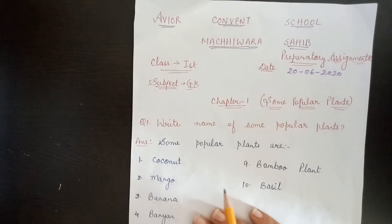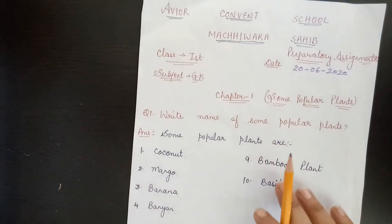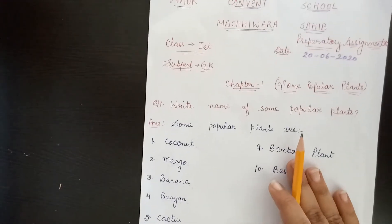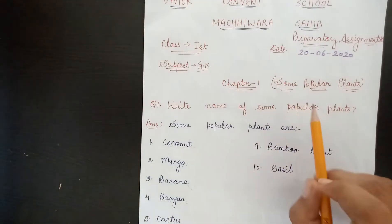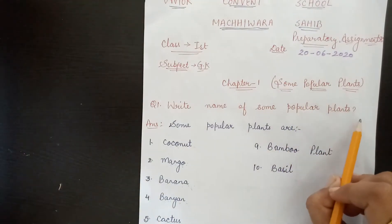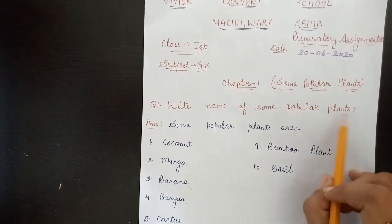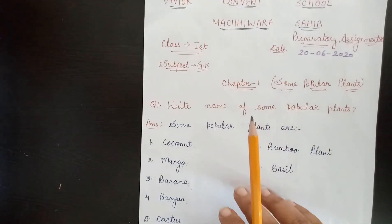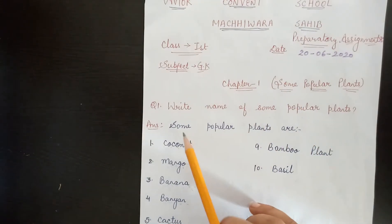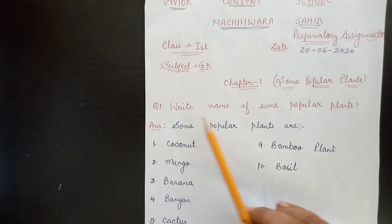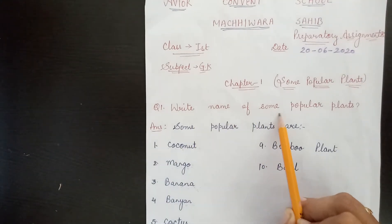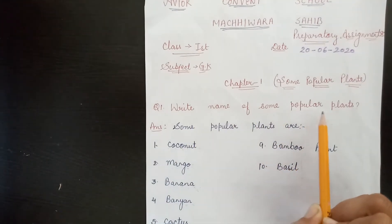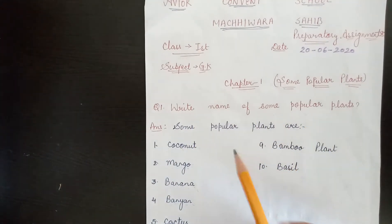So start chapter number one. Open your GK notebook and move to chapter number one, some popular plants. The question is: write the name of some popular plants.